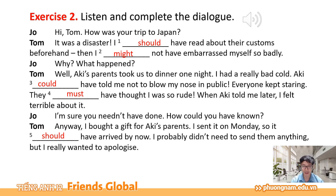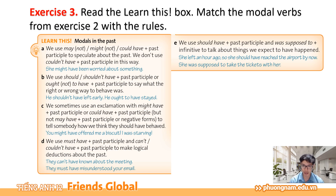Các bạn có thể thấy những từ chúng ta điền từ 1 đến 5 đều là những modal verbs, đều là những động từ khiếm khuyết. Chúng ta cùng tìm hiểu xem điểm ngữ pháp về động từ khiếm khuyết của hôm nay là gì nhé. Exercise number three: read the learn this box. Match the modal verbs from exercise two with the rules. Tại bài tập số 3 này, chúng ta sẽ có 2 nhiệm vụ: đầu tiên là tìm hiểu khung learn this và sau đó nối những động từ khiếm khuyết ở bài tập số 2 với những quy luật từ A đến E trong khung learn this.